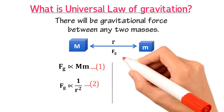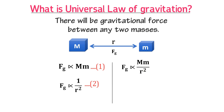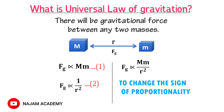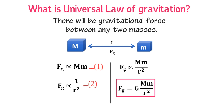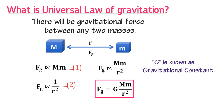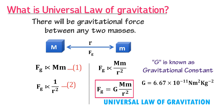To change the sign of proportionality, we introduce a constant. The capital G is known as the gravitational constant, and its value is equal to 6.67 × 10⁻¹¹ newton meter squared per kilogram squared. This gives us the law of universal gravitation, which allows us to calculate the gravitational force between any two masses.